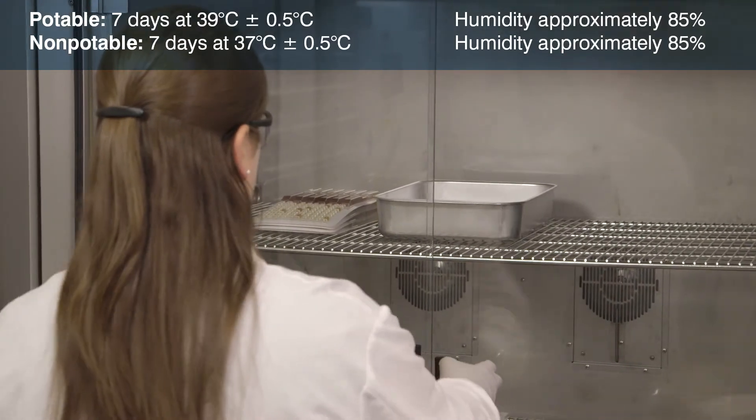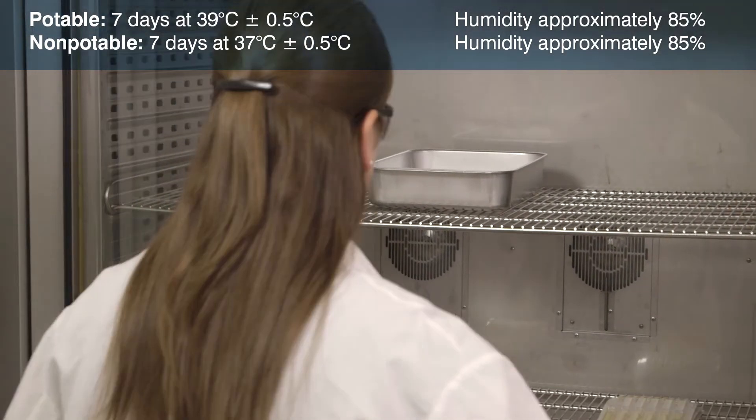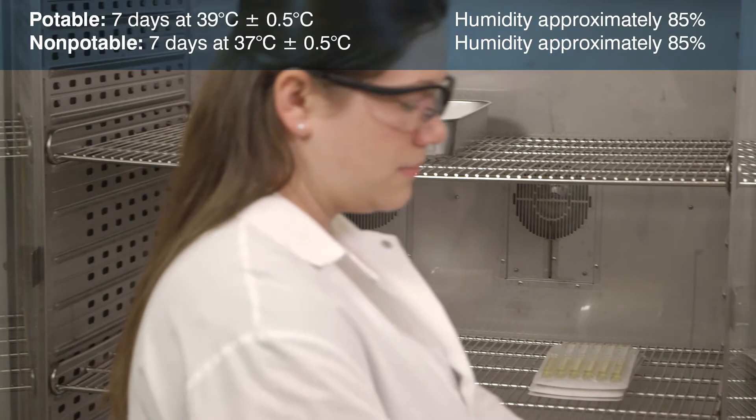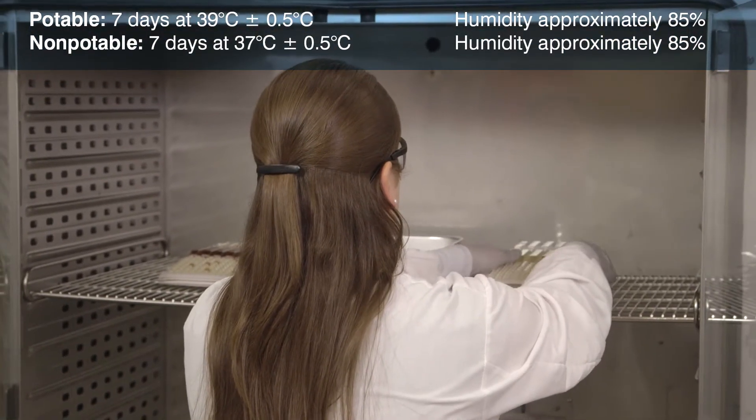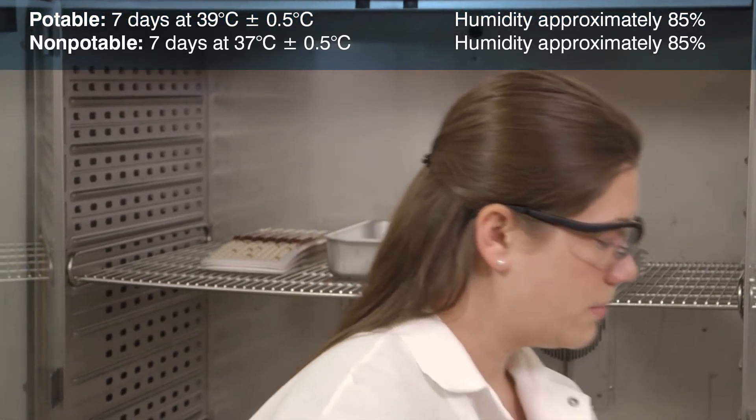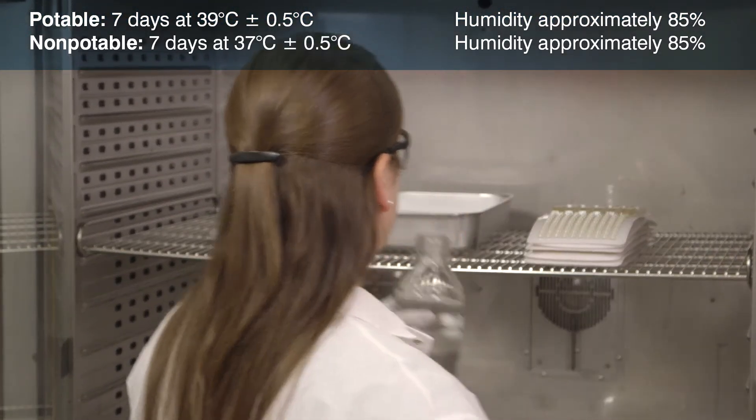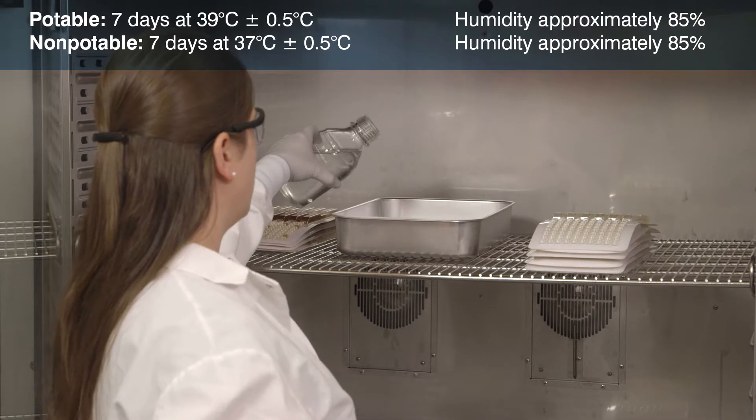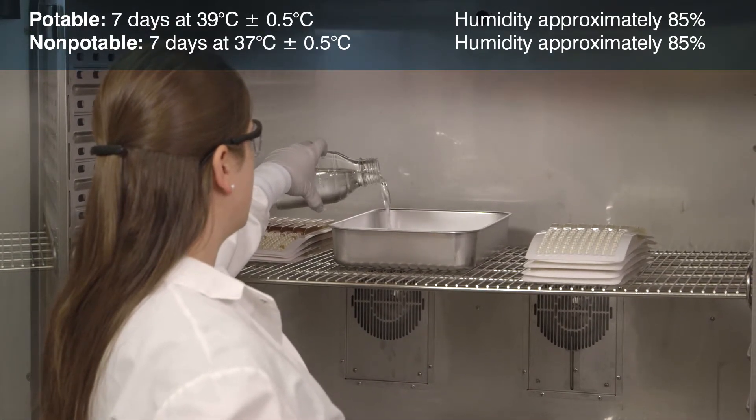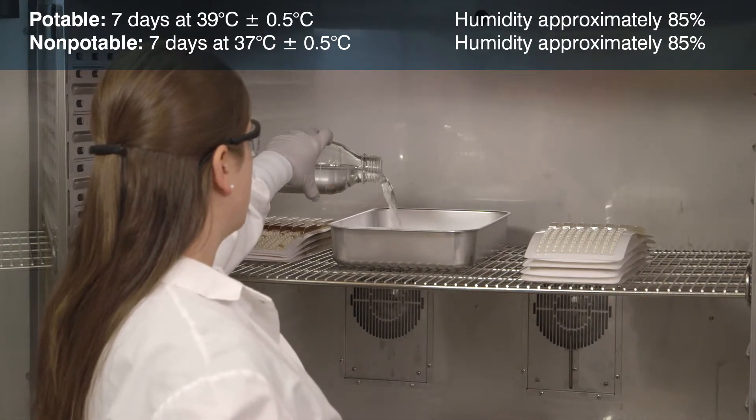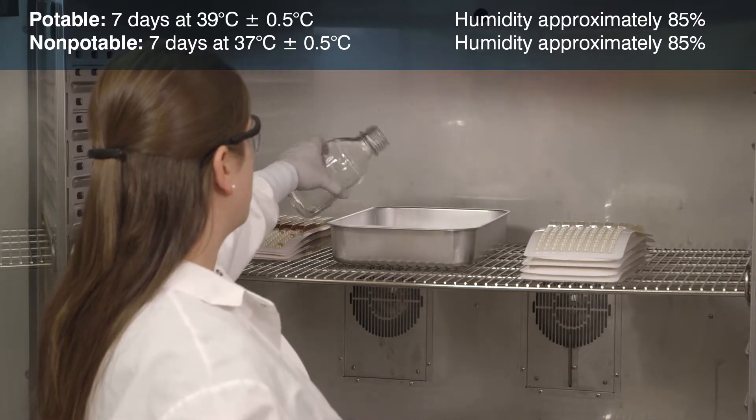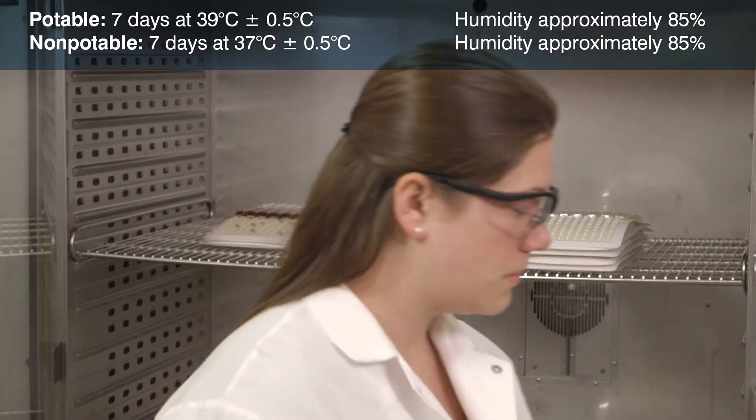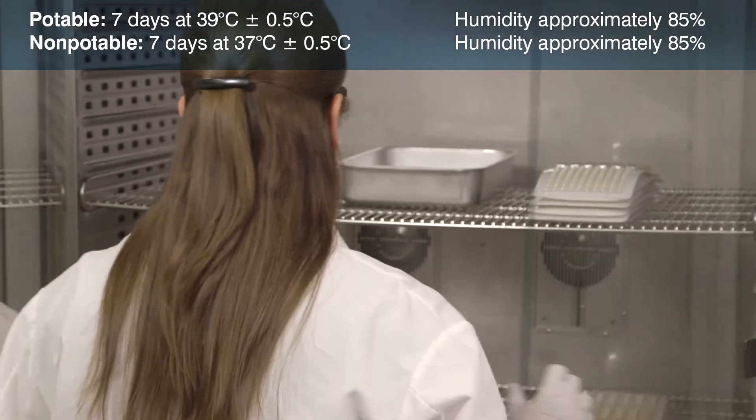Incubate the sealed tray, paper-side down, for 7 days at 39 degrees centigrade, plus or minus 0.5 degrees centigrade, for a potable water sample. For non-potable samples, incubate at 37 degrees centigrade, plus or minus 0.5 degrees centigrade. To prevent trays from drying out, the incubation humidity should be approximately 85%. If stacking trays, alternate tray direction, so large wells are placed above small wells.